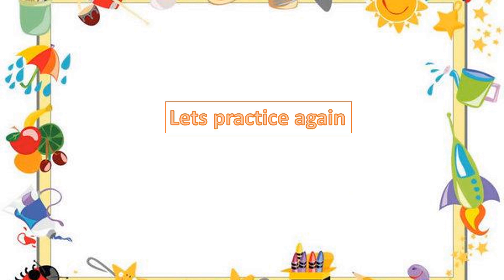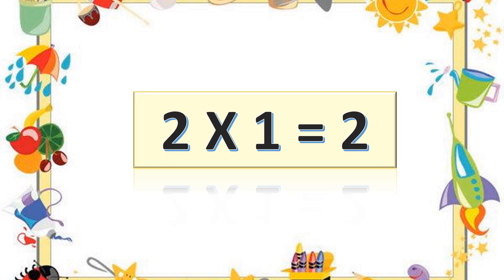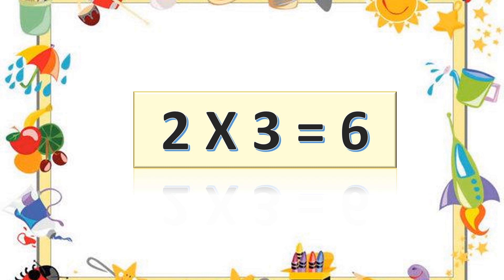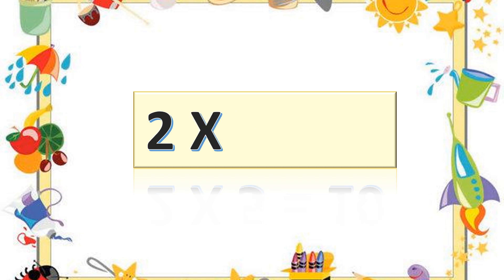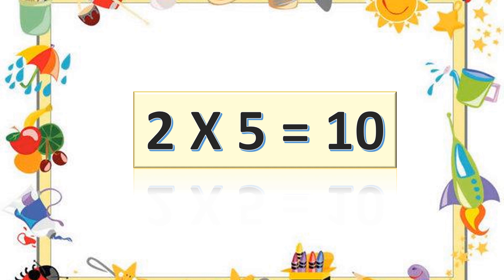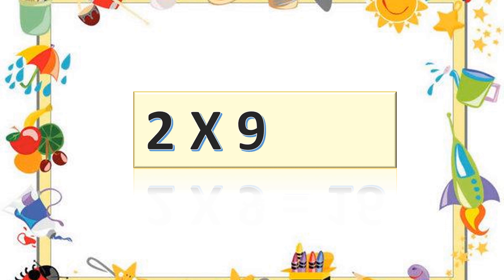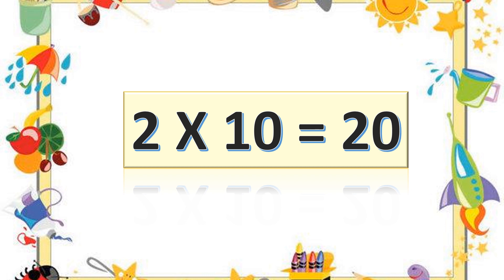Let's practice again. Two ones are two. Two twos are four. Two threes are six. Two fours are eight. Two fives are ten. Two fives are ten. Two sixes are twelve. Two sevens are fourteen. Two eights are sixteen. Two nines are eighteen. Two tens are twenty. Two tens are twenty. Two tens are twenty.